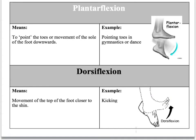Plantar flexion — that is when you point your toes. P for plantar flexion is the same as P for point. So you point the toes of the foot towards the ground, like a ballet dancer. And dorsiflexion is when you bring the foot up closer to your shin.